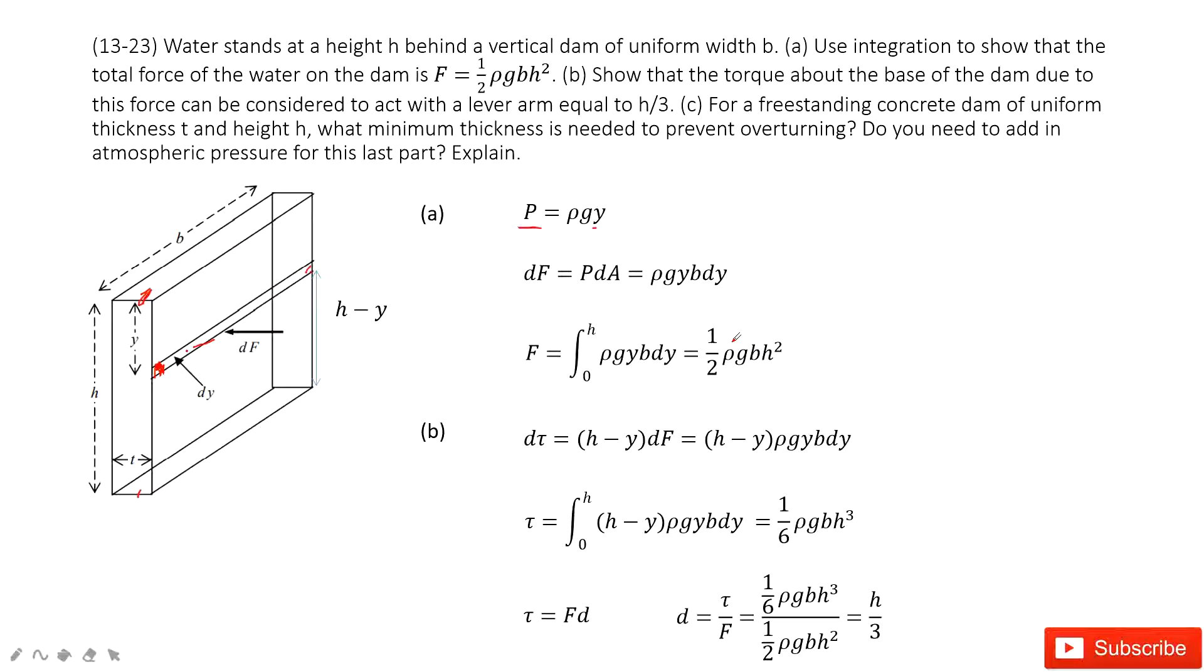About the base of the dam. So base of the dam is zero. Now, due to this force, it can be considered to act with a lever arm equal to h over 3. So how can we do that? First thing we need to find the torque about the base of the dam.